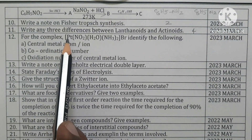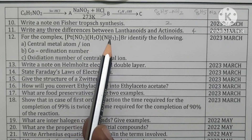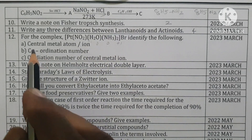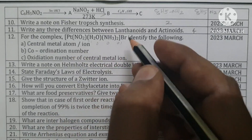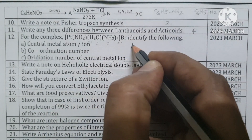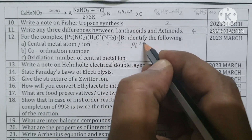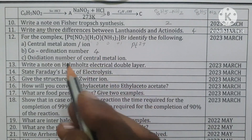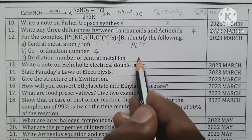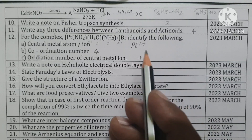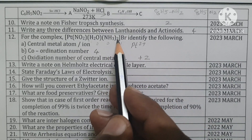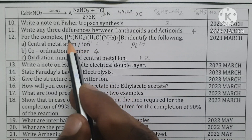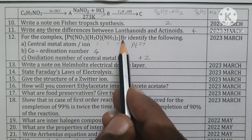For the complex [Pt(NO2)(H2O)(NH3)2Br]: central metal atom or ion is Pt2+, coordination number is 4, oxidation number of the central metal ion is 2+. IUPAC name: diammine aqua nitrito-κN platinum(II) bromide.